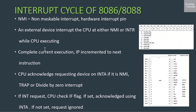The CPU first completes the execution of the current instruction. The instruction pointer is then incremented to point to the next instruction. The CPU then acknowledges the requesting device on its INTA pin immediately if it is an NMI, trap, or divide-by-zero interrupt. The INTA pin is pin number 24 of the 8086 during minimum mode, and it is an active-low signal.